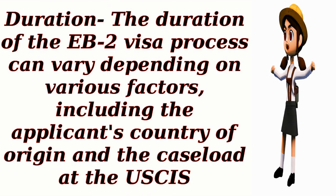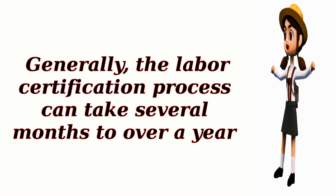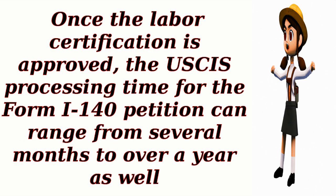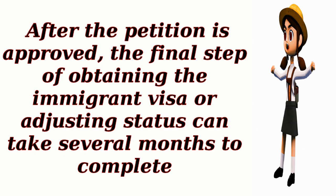The duration of the EB-2 visa process can vary depending on various factors, including the applicant's country of origin and the caseload at the USCIS. Generally, the labor certification process can take several months to over a year. Once the labor certification is approved, the USCIS processing time for the Form I-140 petition can range from several months to over a year as well. After the petition is approved, the final step of obtaining the immigrant visa or adjusting status can take several months to complete.